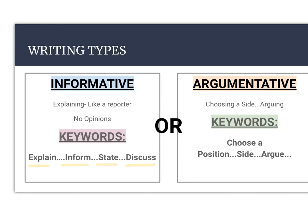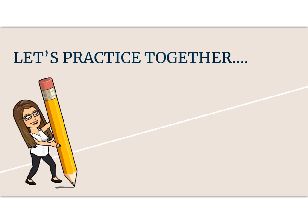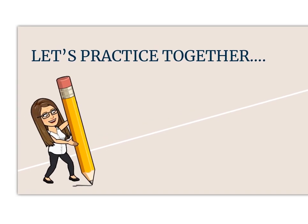The keywords you're looking for in an argumentative prompt would be 'write an essay to choose a position,' 'choose a side,' or 'to argue.' Those keywords are going to let you know that it is argumentative writing. Now let's do some practice. I have two prompts and we're going to read them together. I'm going to show you step by step what you need to do when given a writing prompt.